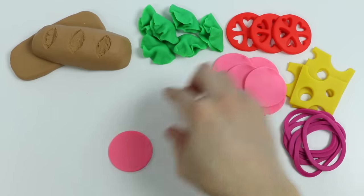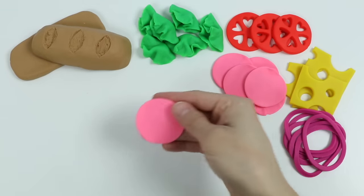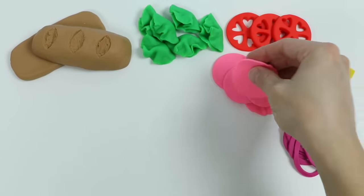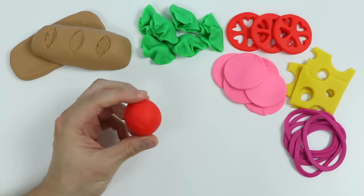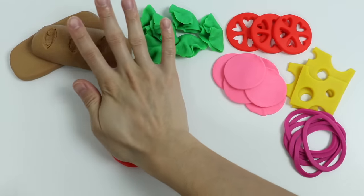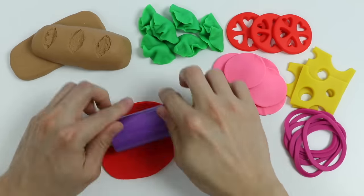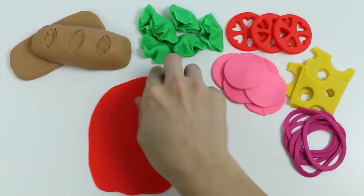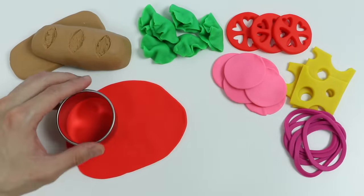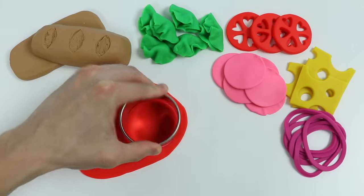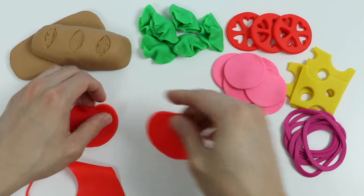Awesome, and we don't need to do anything with these because they already look like ham slices. Now let's roll out some red Play-Doh. Use the large circle cutter, and we don't have to do anything with these either because we just made pepperoni slices.